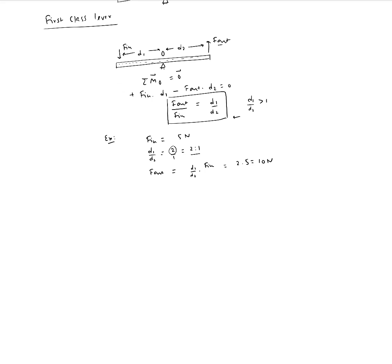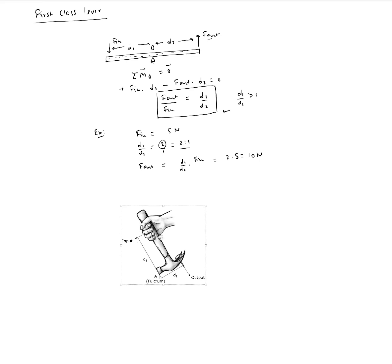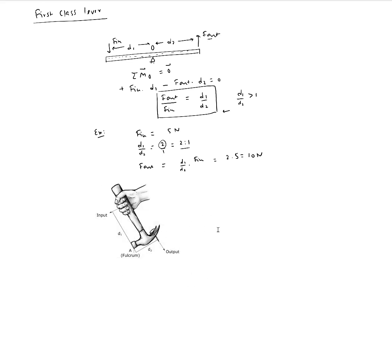A real example of a first class lever is a hammer being used to pull out a nail. The output is at the nail, the fulcrum is where the hammer rests against a stationary surface, and the input force is applied at the handle end. The fulcrum at point A is clearly between the input and output, confirming this is a first class lever.